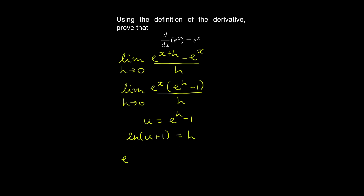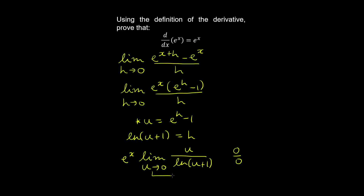We can take e to the x outside the limit, and consider the limit as h approaches zero. By this substitution, when h goes to zero, u goes to zero. We then have u in the numerator over h, which is the natural log of u plus one. This is a limit of zero over zero, so we can use L'Hôpital's rule to differentiate the numerator and denominator. Taking the limit, you can verify this equals one, which shows that the derivative of e to the x is e to the x.